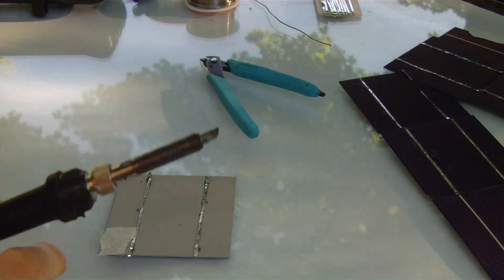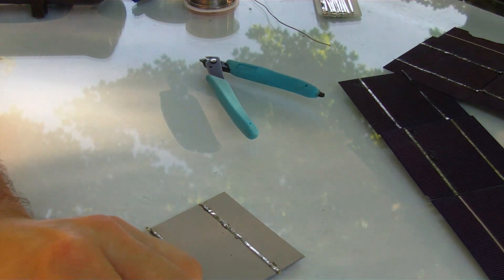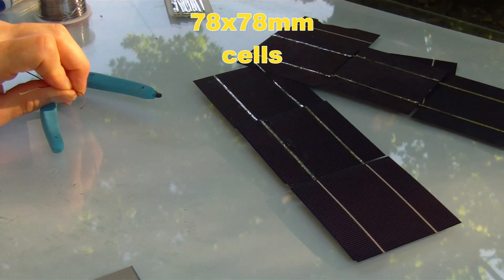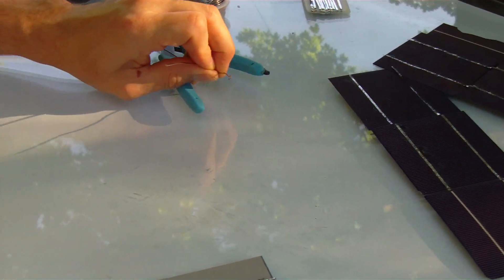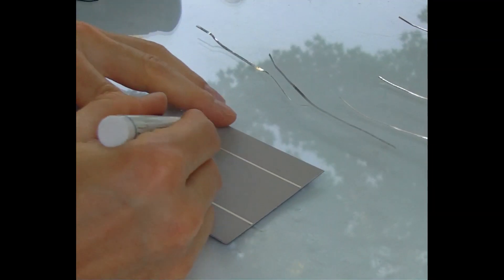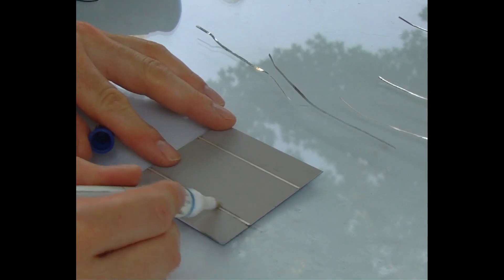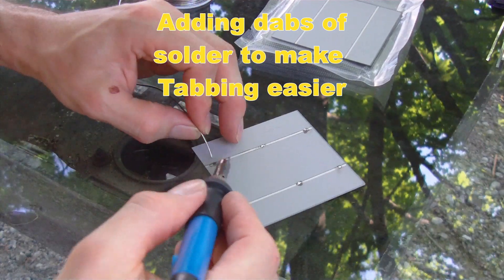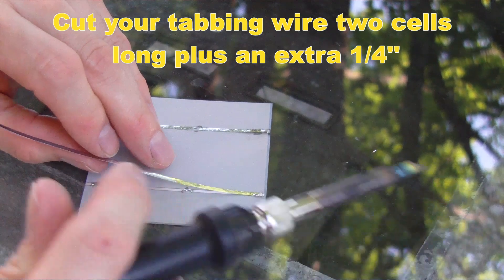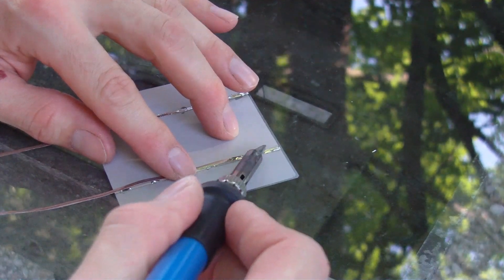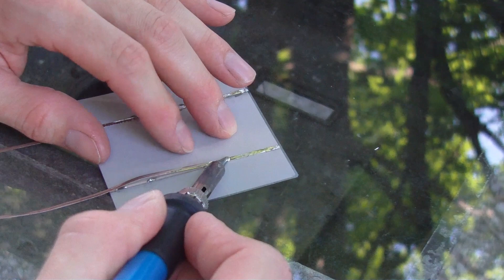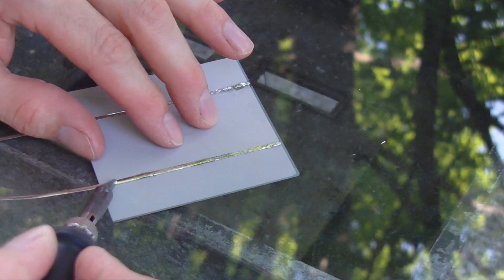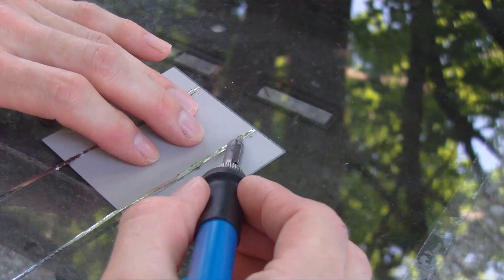All right, so I'm putting together a junk panel. This one's gonna be a five volt panel for charging cell phones or whatever, and I've got a bunch of broken cells here - the duds from building my other panel.